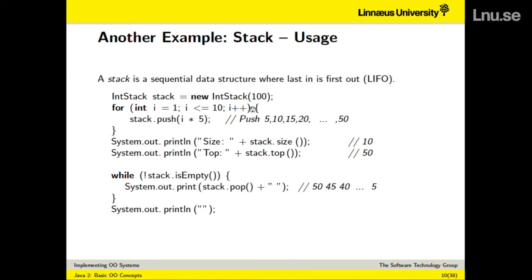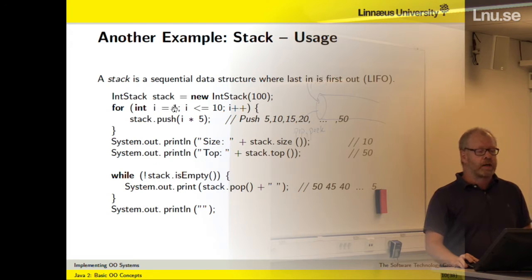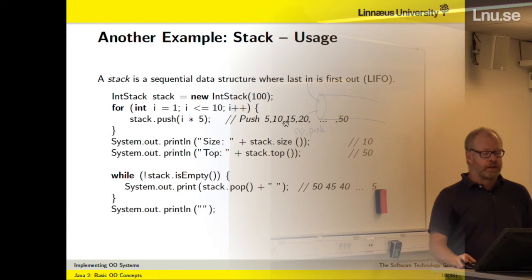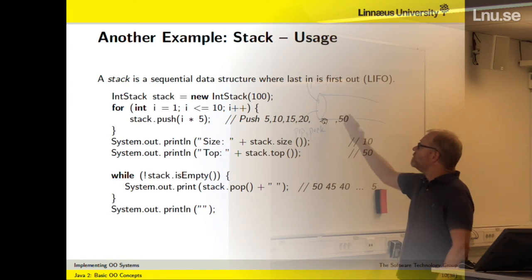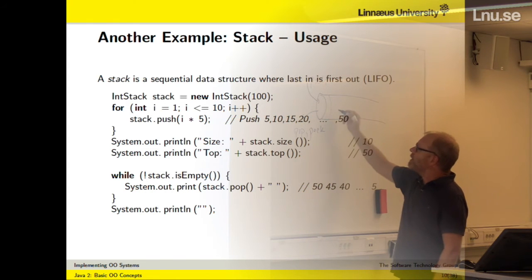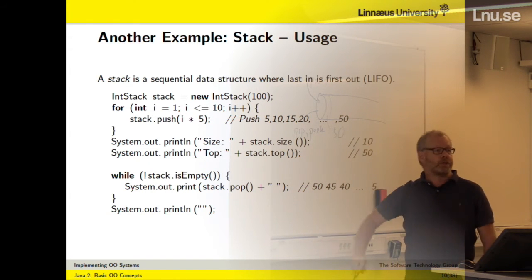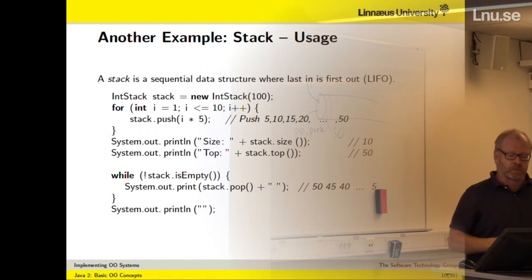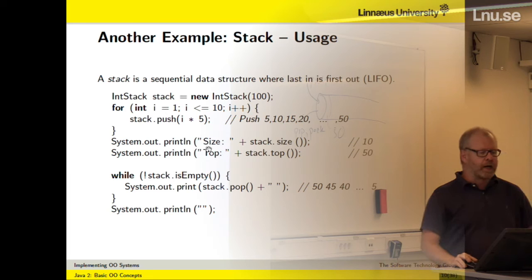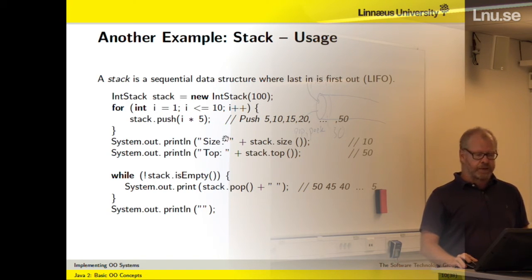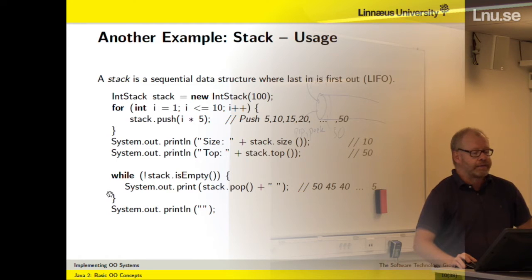This is a stack for integers only. I create a new stack object — an empty stack — and then I iterate 10 times, pushing the values 5, 10, 15, 20, up to 50. Once I'm done, the top element will be 50. Then before popping them, I ask the stack for its size and print it, and ask what the top element is — it's 50. Then I use a while statement: as long as the stack is not empty, pop them one at a time and print them. It will print 50, 45, and so on.